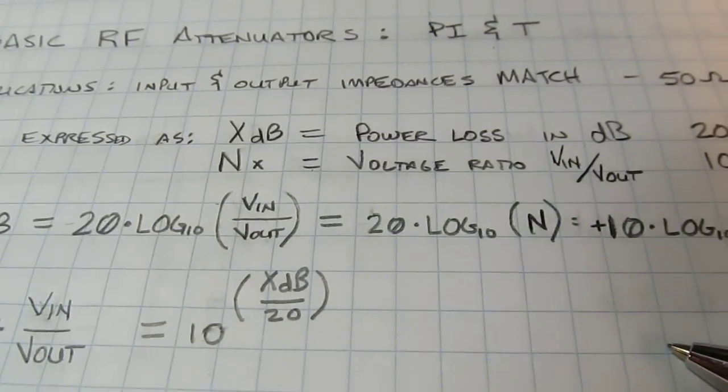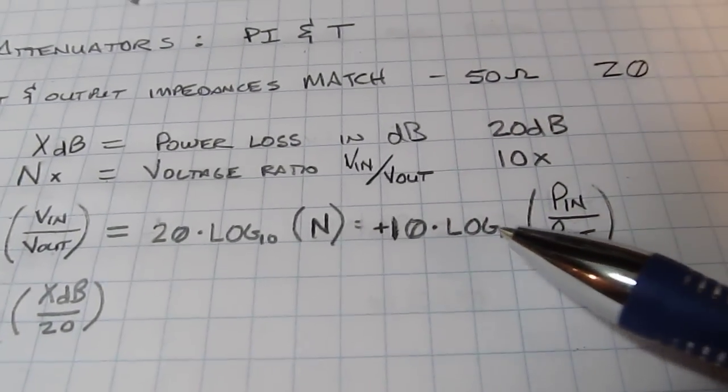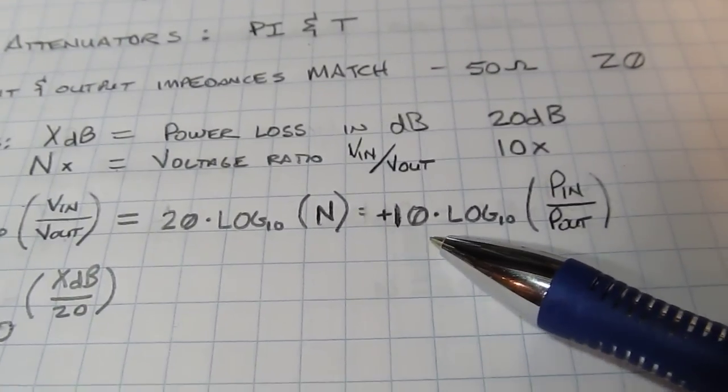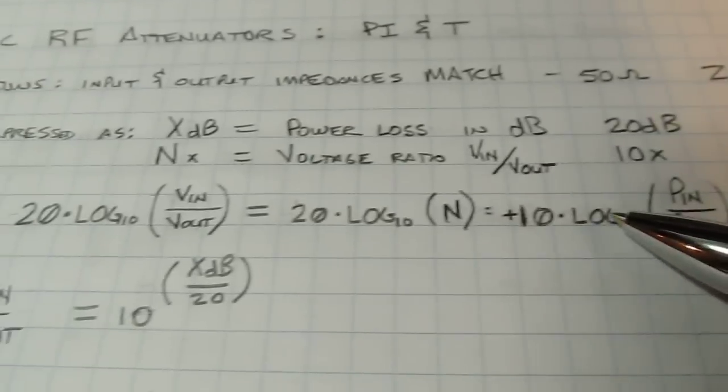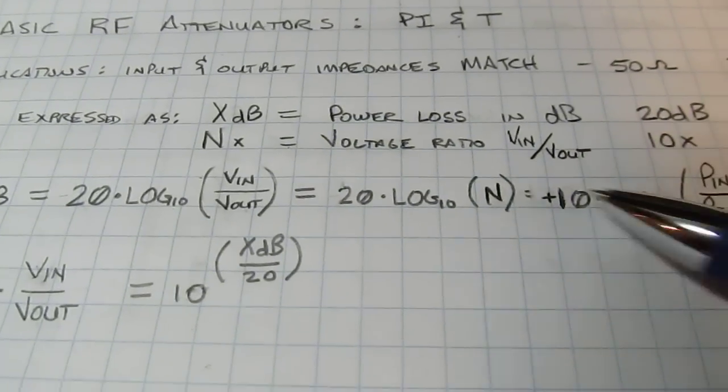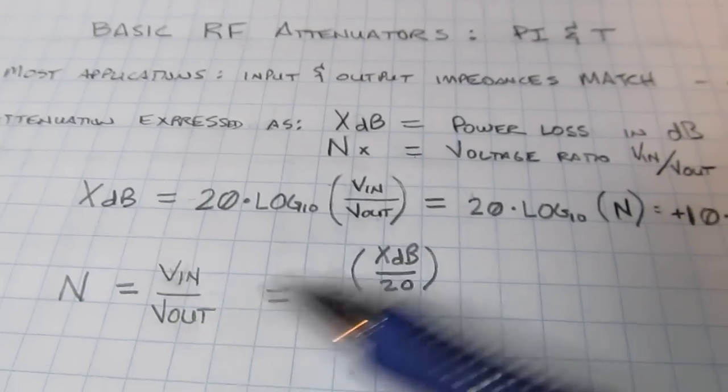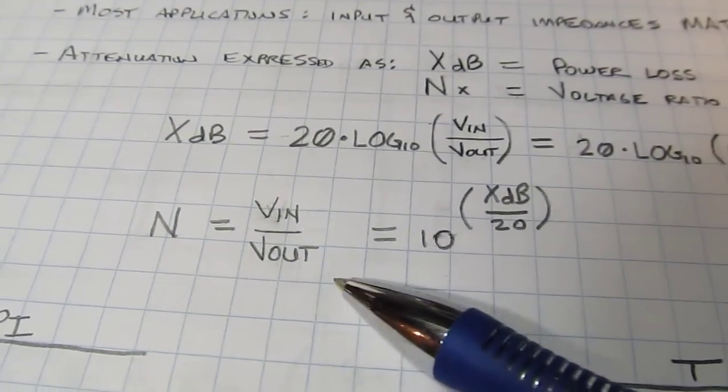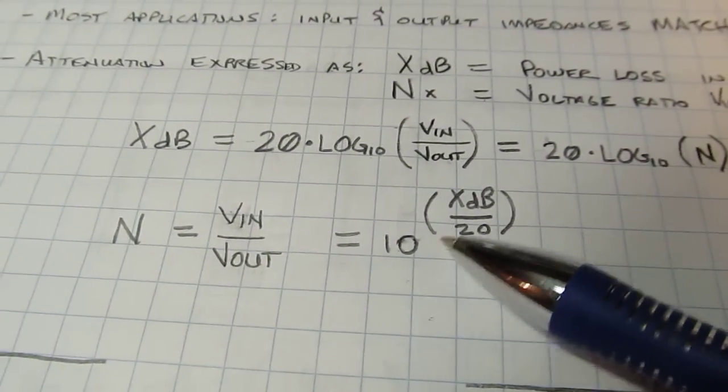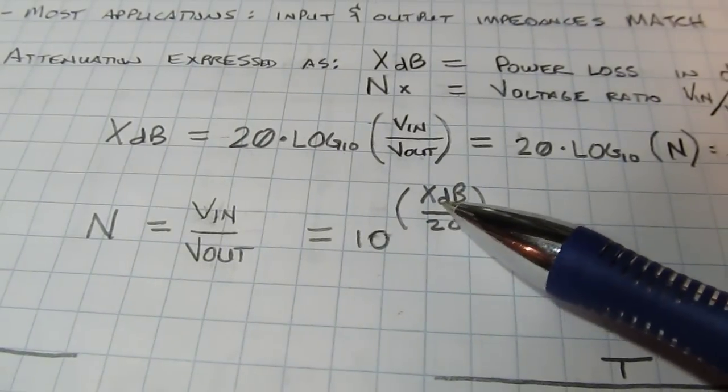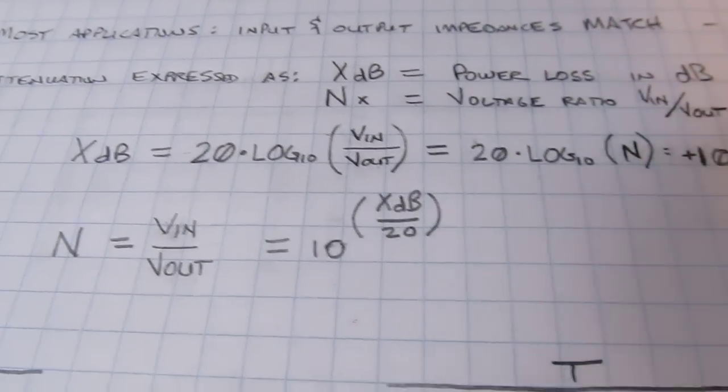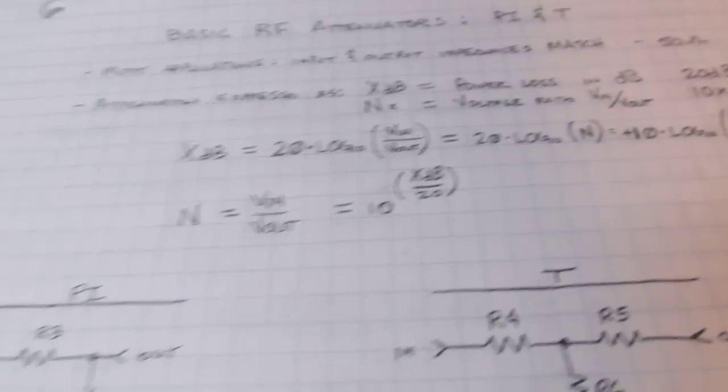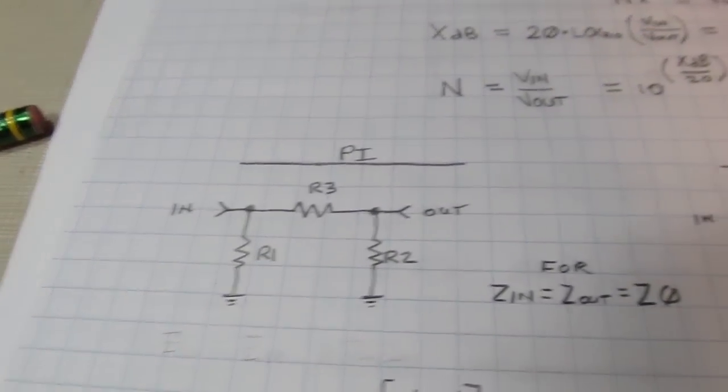Also then equal to 10 times the log of Pin divided by Pout. So some of the voltage relationships going to dB and then going the other way - if we want to calculate N from dB, it would simply be 10 raised to the power of the dB value divided by 20.